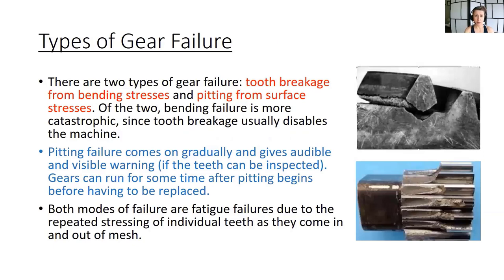A little bit about gear failure. There are two types of gear failure: tooth breakage from bending stresses, which you can see here in this picture that tooth just breaks off, and then pitting from surface stresses, so contact stress. Of the two, bending failure is more catastrophic because you can imagine this tooth breaking off and then getting stuck in the transmission wouldn't be a good situation. But pitting comes on gradually and will give either an audible or visible warning and you can inspect the teeth. So just as you learned for bearings, after pitting begins, this wearing of the surface begins, gears can run for some time before they have to be replaced.